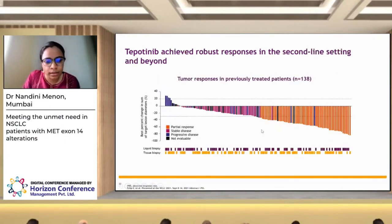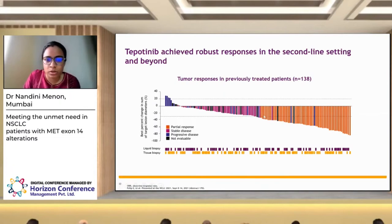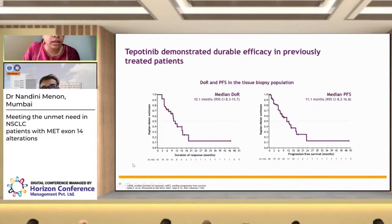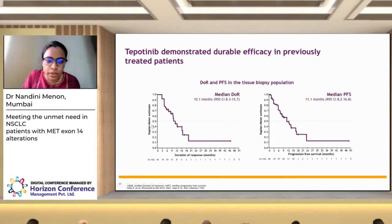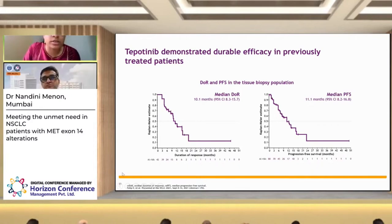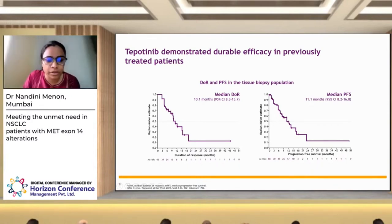Looking at patients who received tepotinib in the second or third-line setting, there is also a good response with partial responses seen in this group. Duration of response was around 10.1 months with a PFS of 11.1 months, which is lower than what is achieved in the treatment-naive setting but still clinically meaningful.